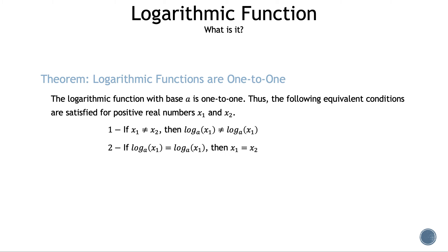Next, let's take a look at the theorem: logarithmic functions are 1-to-1. The logarithmic function with base a is 1-to-1, thus the following equivalent conditions are satisfied for positive real numbers x sub 1 and x sub 2. Statement 1: if the inputs don't equal each other, then the outputs don't equal each other. Statement 2 is the contrapositive of statement 1: if the outputs equal each other, then the inputs equal each other.